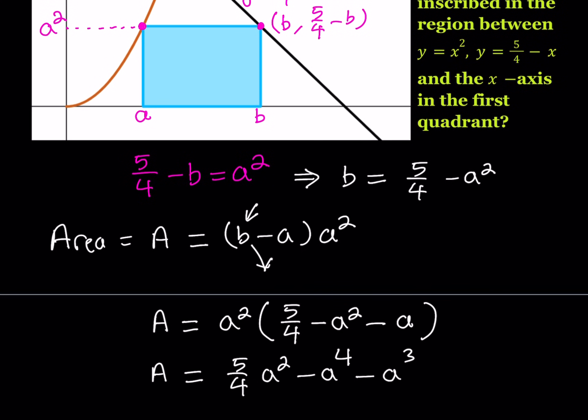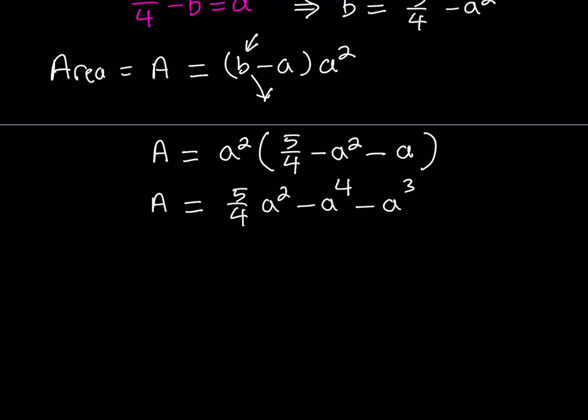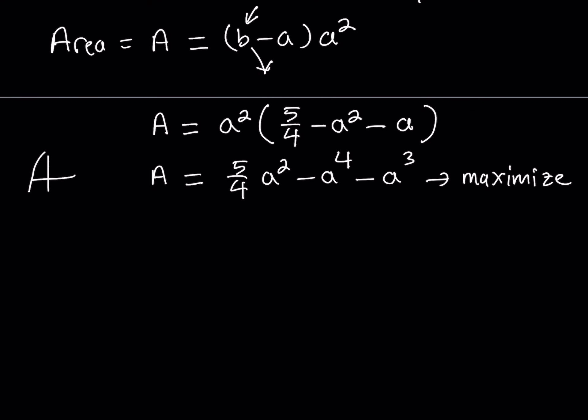If you change the value of a you get different rectangles with different base and height. I've written area as a function of a, and I want to find which value of a maximizes it. To find the maximum, we look for where the function has a horizontal tangent — where the function increases and then decreases. Some functions have sharp corners, but the idea remains: increase then decrease gives a maximum. Let's maximize this function by finding its critical points, and for that we differentiate with respect to a.